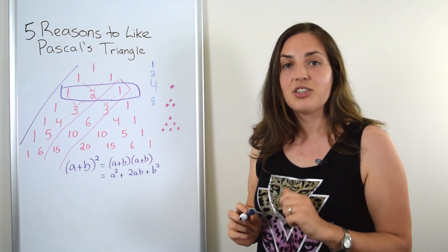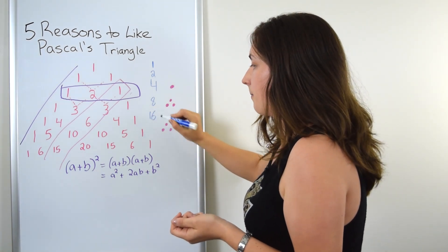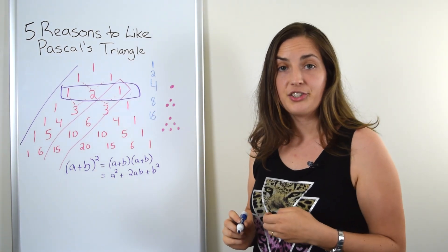If you keep going like this, you'll see that you always are getting powers of two. So the next one you'll get will be 16, then 32, and then 64.